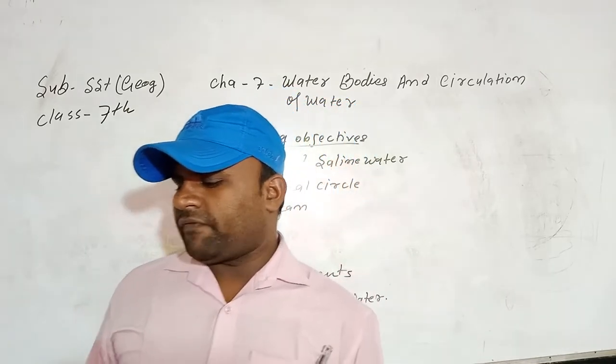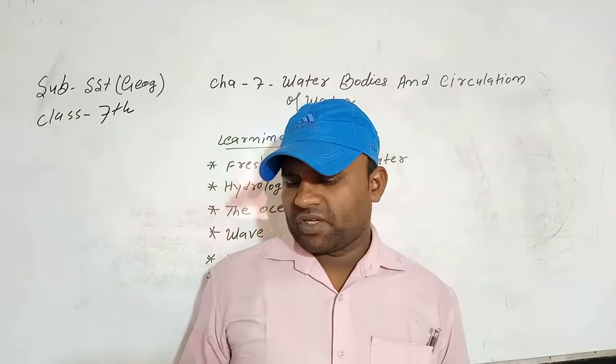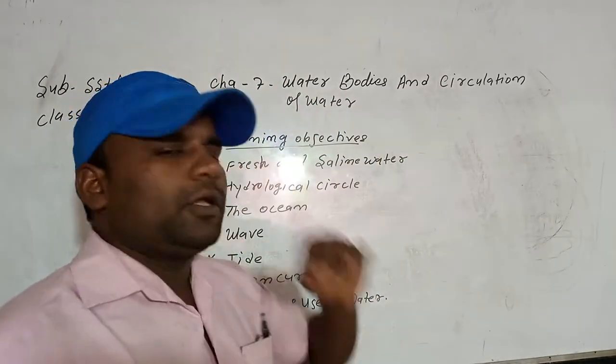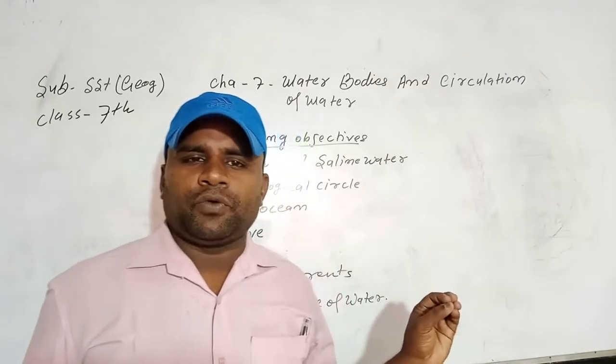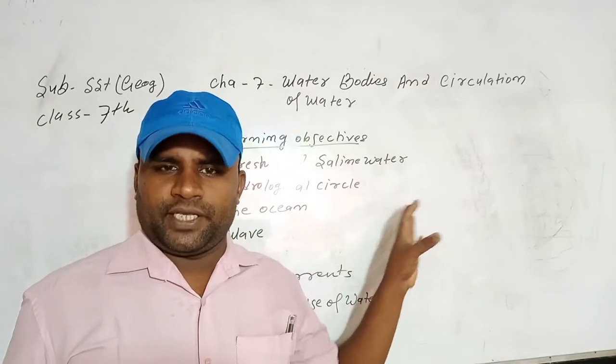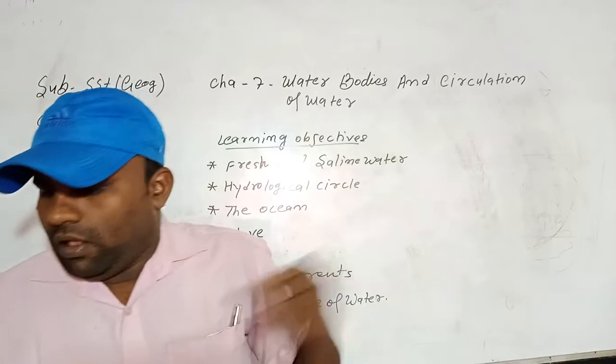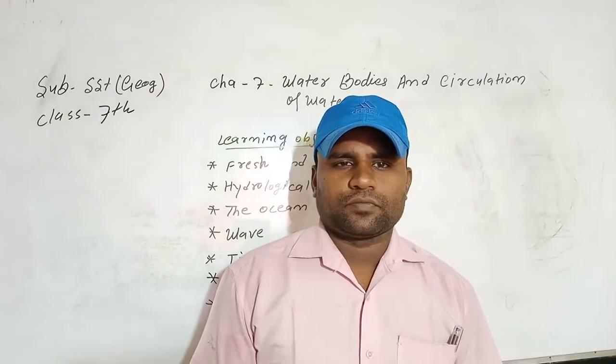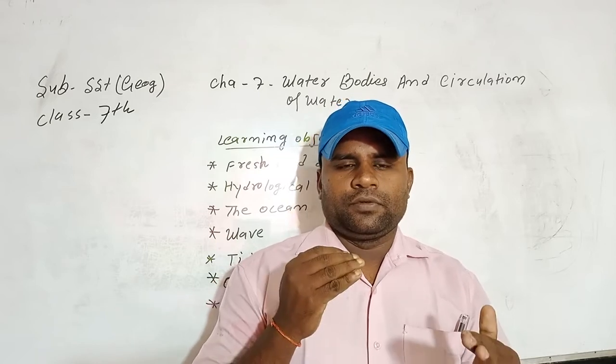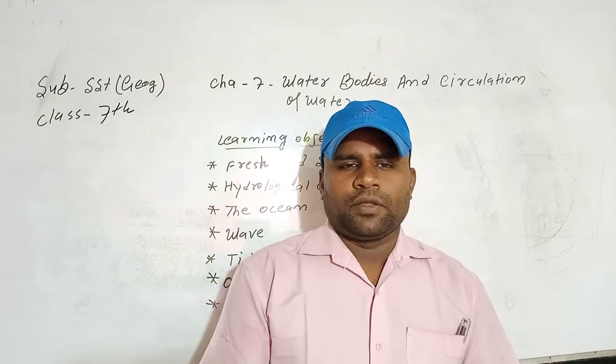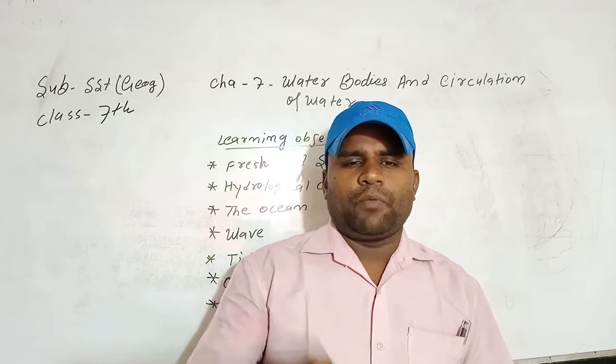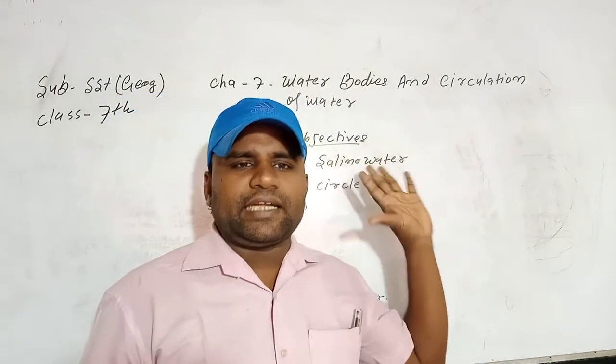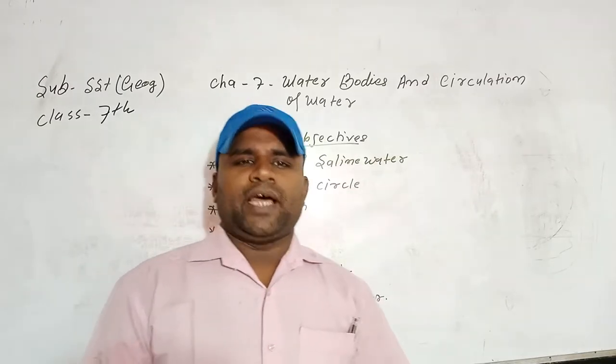About 71% of the surface of the earth is covered with water. Now, according to this high percentage of water, this earth, this planet is known as blue planet.